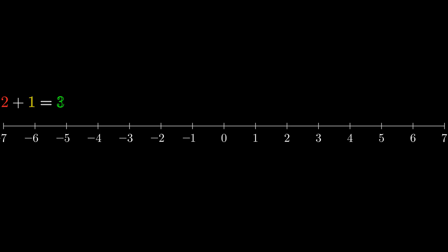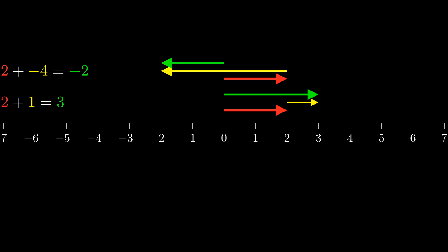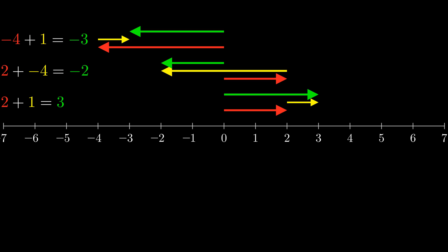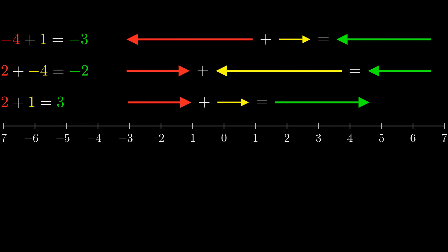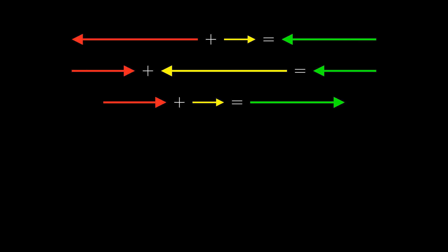We know that 2 plus 1 equals 3. We can represent that geometrically with these vectors. Notice that this vector represents the number 2, this vector represents the number 1, and the result vector represents the number 3. Let's do a few more, such as 2 plus negative 4 equals negative 2, and negative 4 plus 1 equals negative 3. If we want the addition of vectors to match the addition of numbers, we want these equations to be true. Now that we have these equations, we can forget about numbers. So all we need to do is find a definition of addition from these equations.